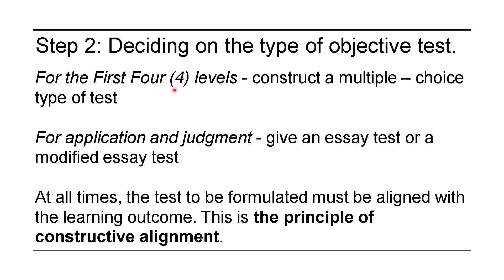As much as possible, align the test with the Bloom's taxonomy that you have outlined in your learning outcomes. For the first four levels, you can construct a multiple-choice type of test. For application and judgment — covering evaluation — give an essay test or modified essay test. You can also use this in the Create section. The test to be formulated must be aligned with the learning outcome. This is what we call the principle of constructive alignment.